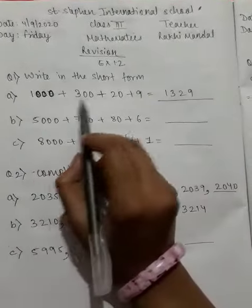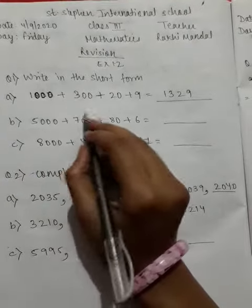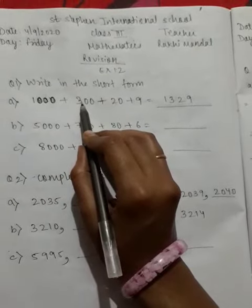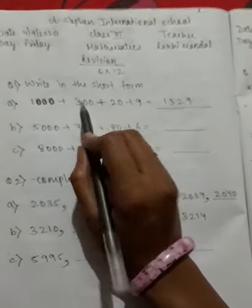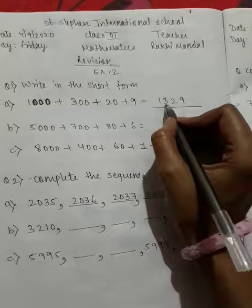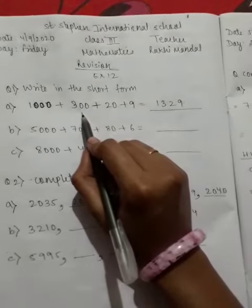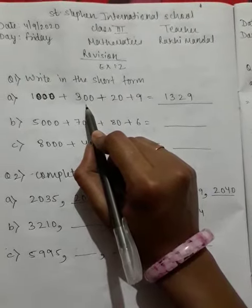Easy hai. Agar hum yahan pe 300 nahi hota, yahan pe sirf 20 hota, 300 nahi hota, so we will put here 0 in 100 place. Okay students, easy.